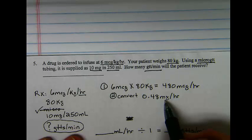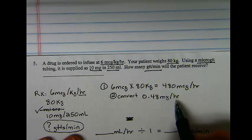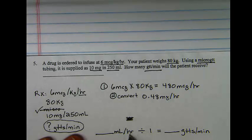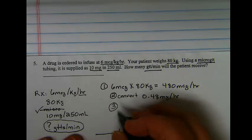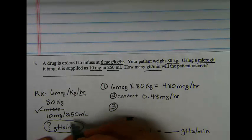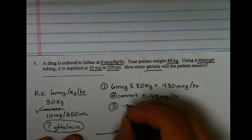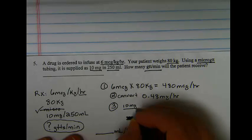Now that I know the milligram per hour amount of drug needed, I can solve for the volume per hour to give that. So my third step will be taking 10 milligrams in 250 milliliters.